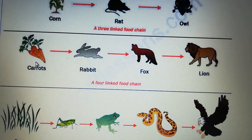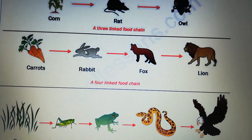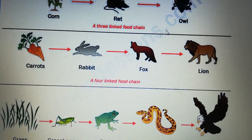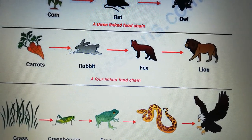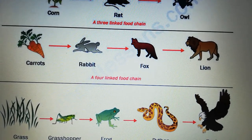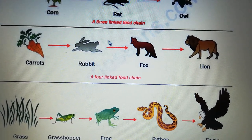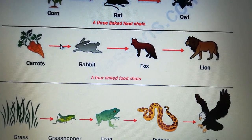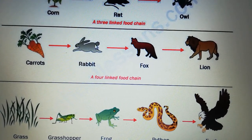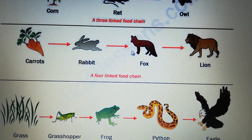If we move to the next food chain, we have carrot that is eaten by rabbit, eaten by fox, eaten by lion. And it is composed of four links. So it shows us that the rabbit eats the carrot, and the fox eats the rabbit, and the lion eats the fox.